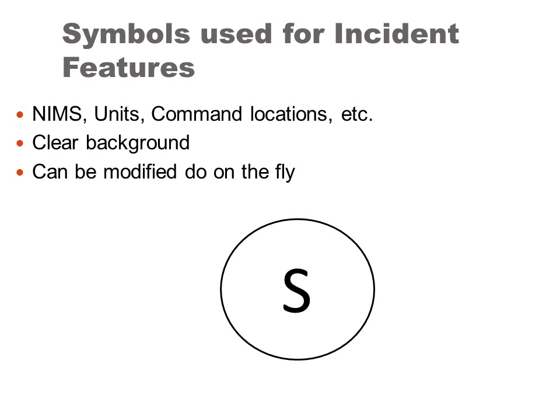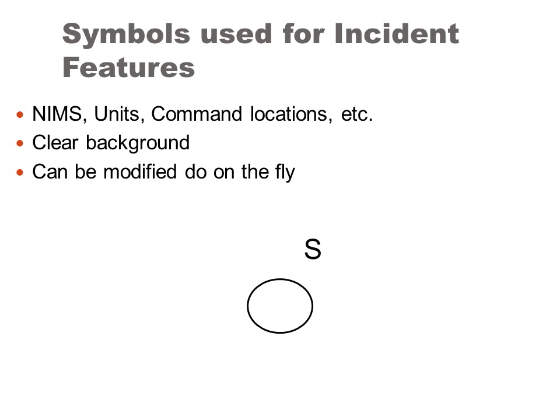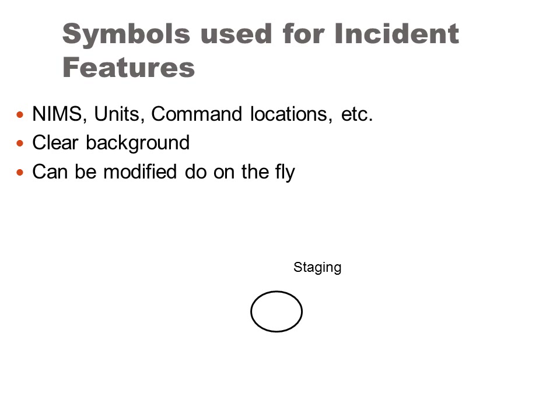Incident Symbols have three subcategories: Incident Features, which are features that support the incident; Location of ICS features; and Unit Location. All these symbols are scalable and adaptable. All have a clear background so that in the event these symbols are hand-drawn, time is not consumed by coloring the symbol.